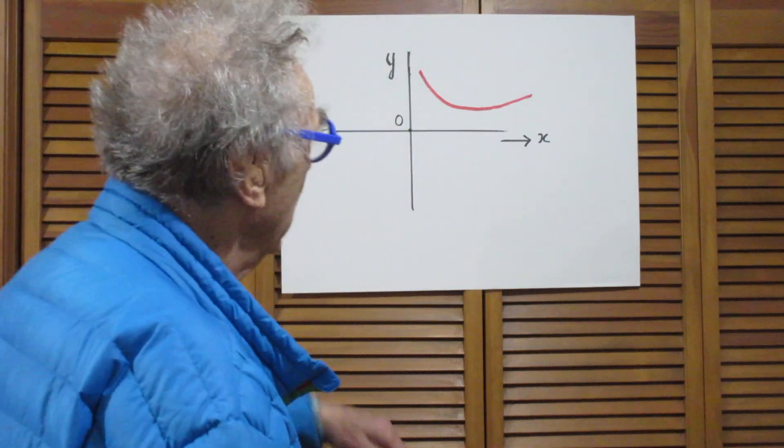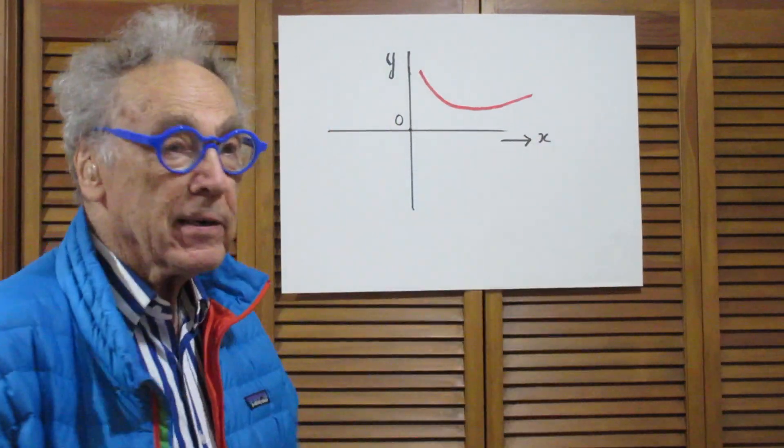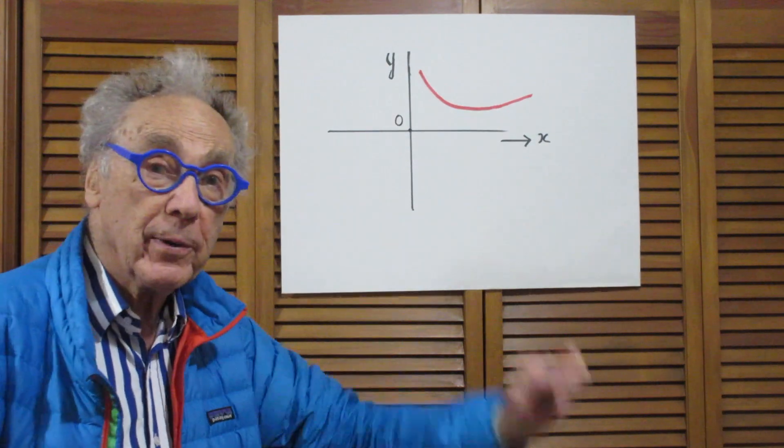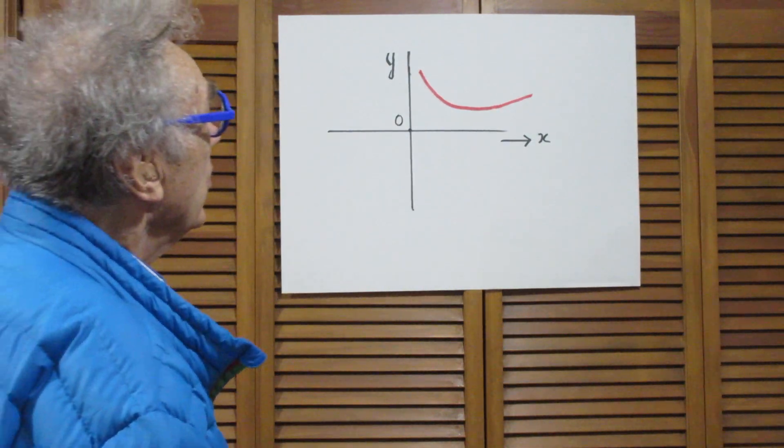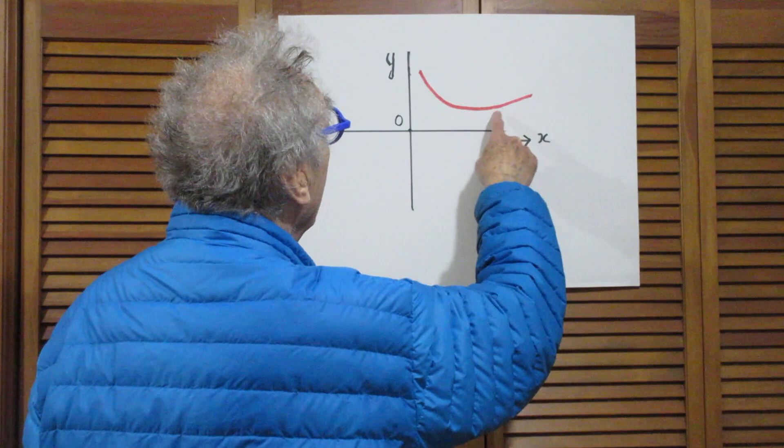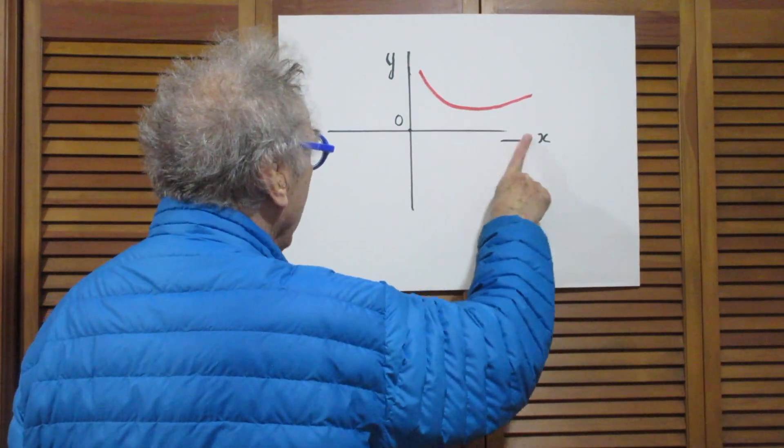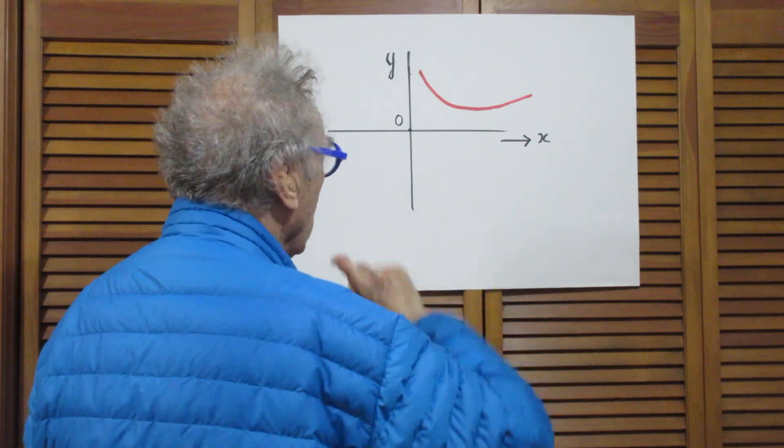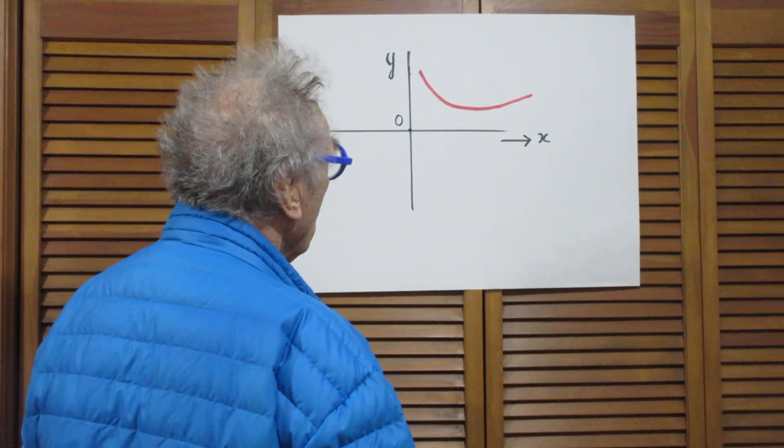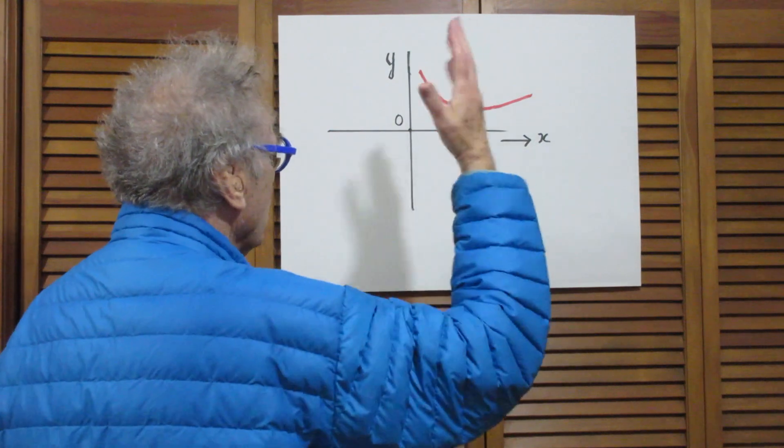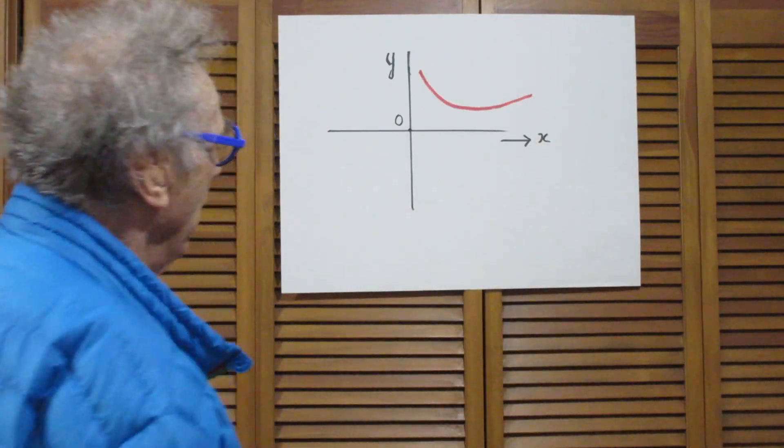If you plot it, y versus x—y here and x there, x is capital L, remember—then you would find a minimum somewhere here at a given value for capital L. This is not to scale in any way, but this is the basic idea for minimizing a function.